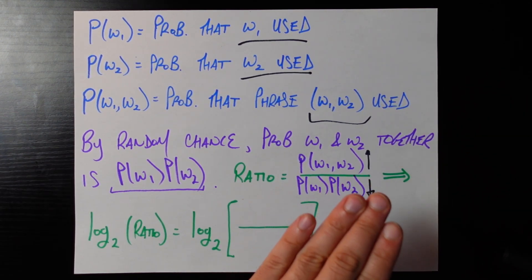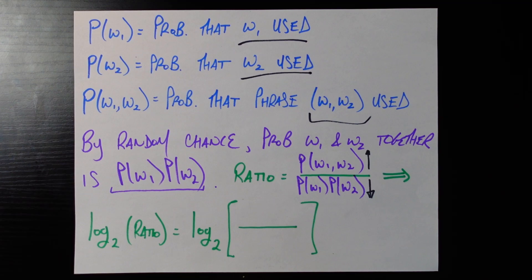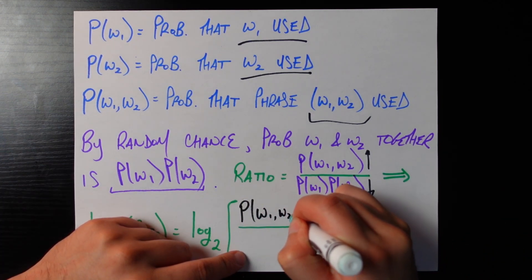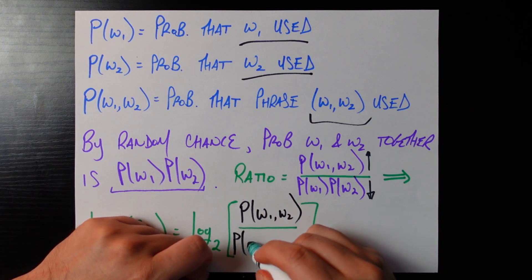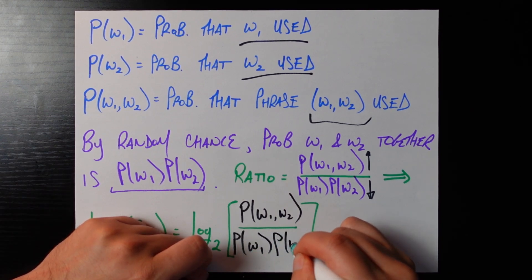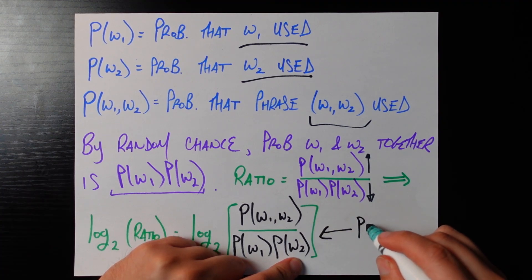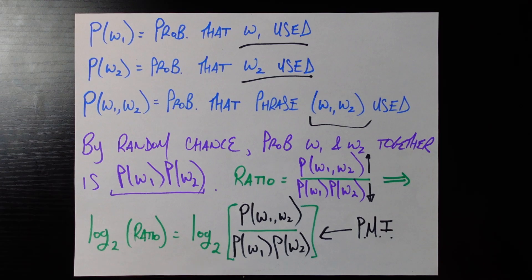And now this isn't exactly pointwise mutual information we need to do one final transformation to it and that is take the log base 2 of this ratio. So if we take the log base 2 of p w1 comma w2 on the numerator and then p w1 p w2 on the denominator then this is called pointwise mutual information or pmi.